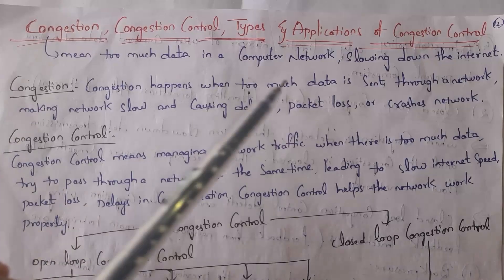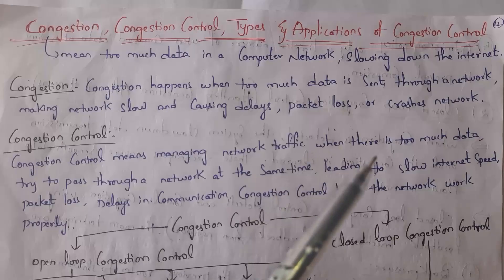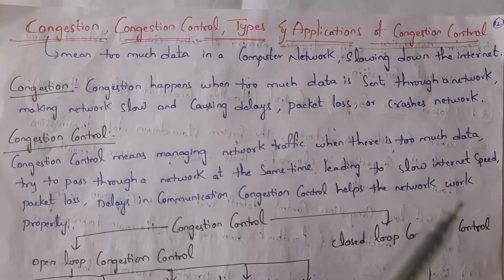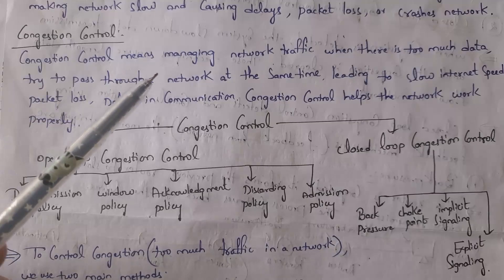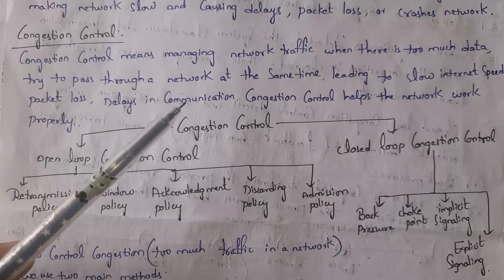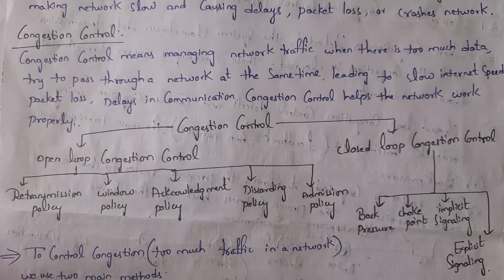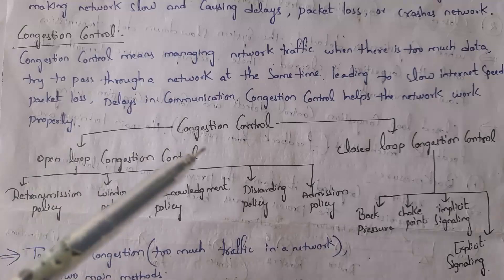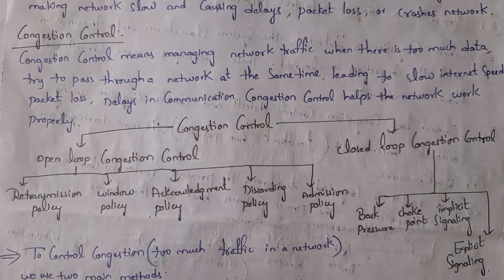Congestion happens when too much data is sent through a network, making the network slow and causing delays. That means data will reach the receiver very slowly, and sometimes data packets may be lost, and sometimes the entire network will crash.